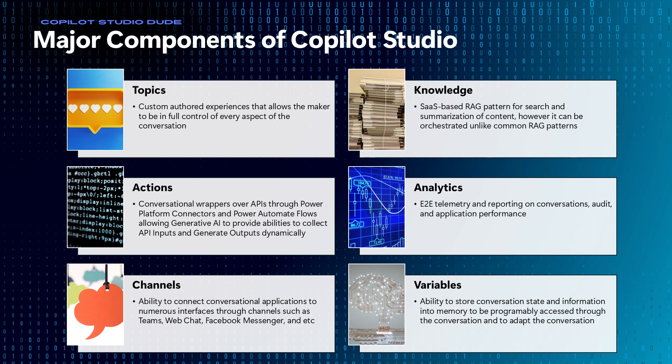Starting with the major components of Copilot Studio: we have topics, which are custom-authored experiences you build inside Copilot Studio; we have knowledge, which is essentially unstructured data or RAG-pattern scenarios where you make content available for search and summarization; and then we have actions. Actions are the concept of wrapping an API, a Power Automate connector, a Power Automate flow, or a Bot Framework skill so that you can talk to it like it's a human — a conversational wrapper.